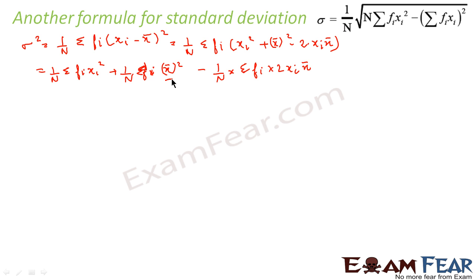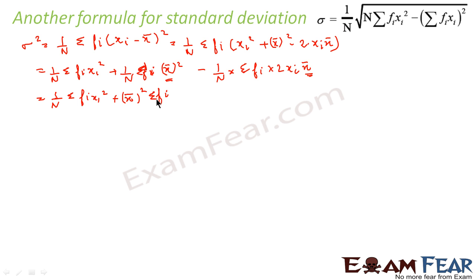Now we know that mean is constant, so we can take it outside the summation. Just as summation of 2x equals 2 into summation of x, the same applies here — we get 1 by n sigma fi·xi squared, and we can factor the constant mean outside.